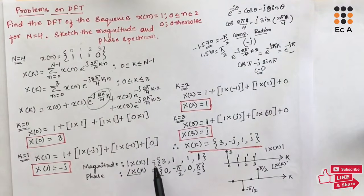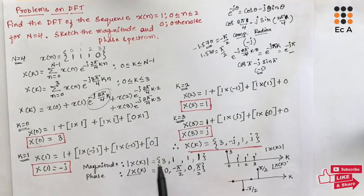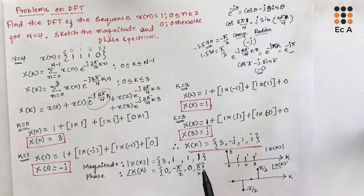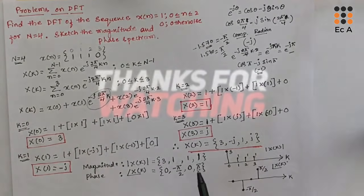This is about the problem on DFT and how to calculate the magnitude and phase spectrum of the obtained DFT. I hope you have understood the topic. Thank you.